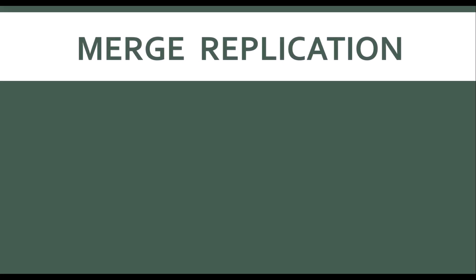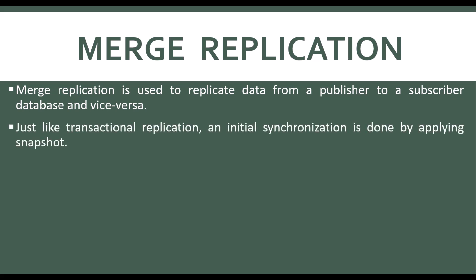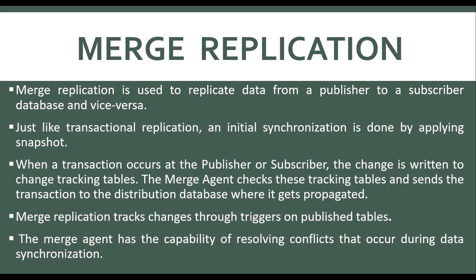What is merge replication? This is a bidirectional replication which allows changes to happen at both the publisher and subscriber. Both are allowed to make changes independently and then merge the results. Just like transactional replication, initial synchronization is done by applying the snapshot. When a transaction occurs at the publisher or subscriber, the change is written to the change tracking tables, and then the merge agent checks these tracking tables and sends the transaction to the distribution database where it gets propagated.